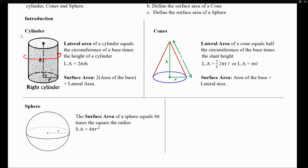But why is that true? The lateral area is just the section that surrounds our cylinder horizontally. So how come this section is defined as just being the circumference of the circle, 2πr, times the height of the cylinder?